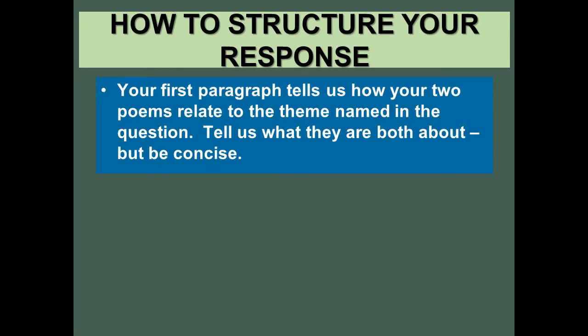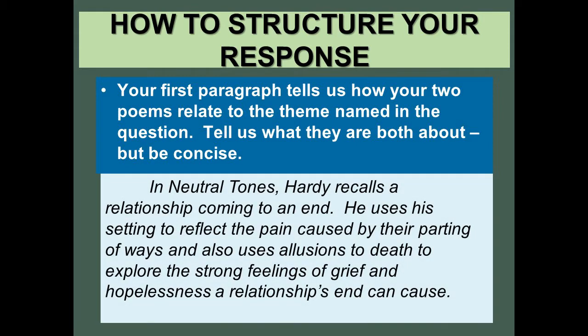Now we're going to think about how we are going to structure our response in the exam. In the exam, you've got 45 minutes to compare two poems. Your first paragraph is going to tell us how your two poems relate to the theme named in the question — tell us what they're both about, but be concise. You only need a few sentences about each poem in a paragraph. Here's an example for Neutral Tones: Hardy recalls a relationship coming to an end. He uses his setting to reflect the pain caused by their parting of ways, and also uses allusions to death to explore the strong feelings of grief and hopelessness a relationship's end can cause. In the exam, you'll be writing about two poems, so that's what you'd need to do for Neutral Tones if it's the named poem or one you choose.